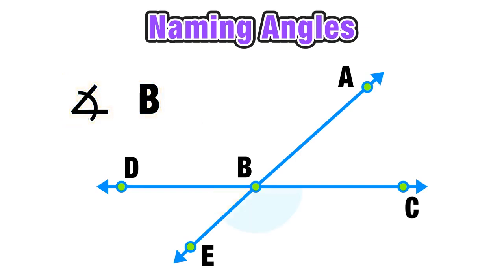And finally our blue angle is contained within the three points CBE where B is the vertex. So we can name this angle angle CBE.